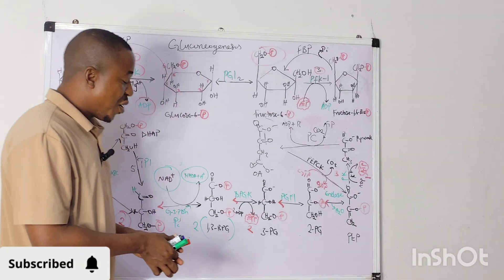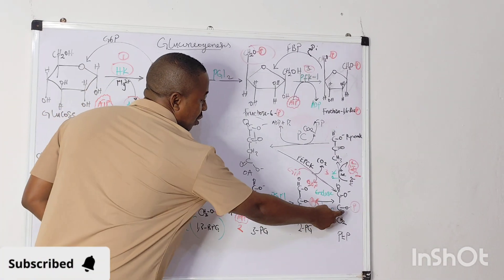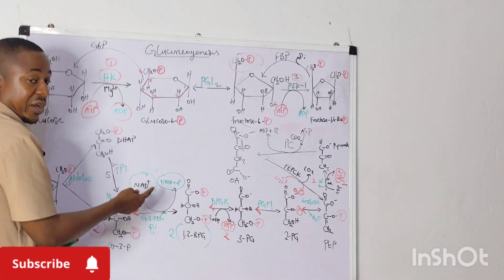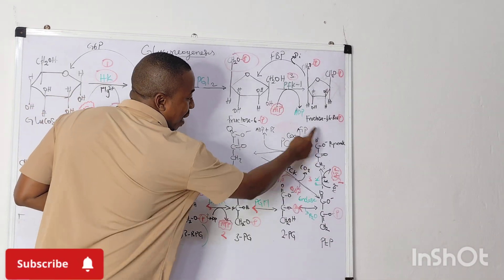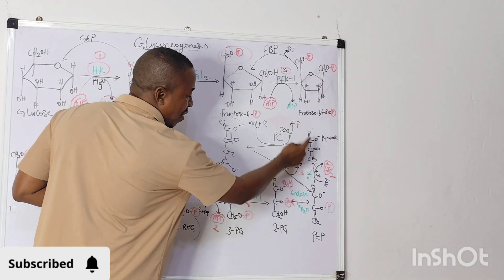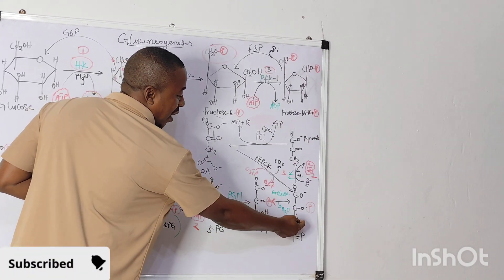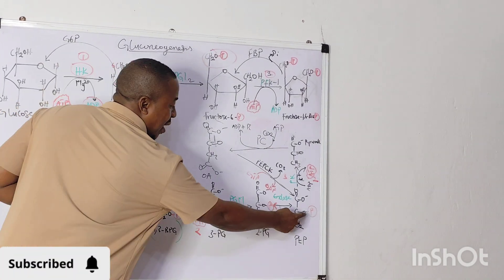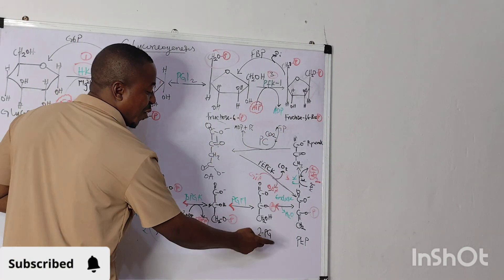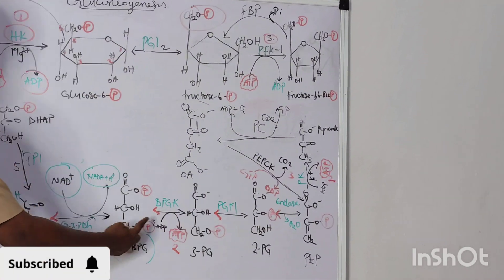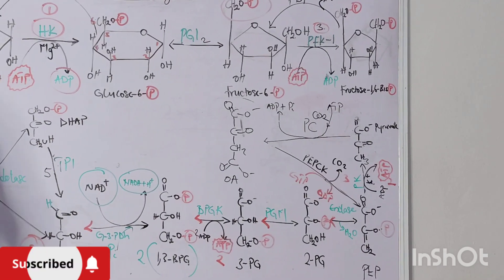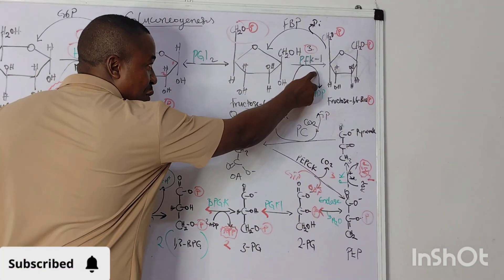So now the PEP that is now formed will go back through the glycolysis pathway, which uses the same enzymes. So once we have bypassed this pyruvate step to form the PEP, the PEP will now be acted upon by enolase to form 2-phosphoglycerate. The same process goes through to get to the third step, which is the conversion of fructose-1,6-bisphosphate to fructose-6-phosphate.